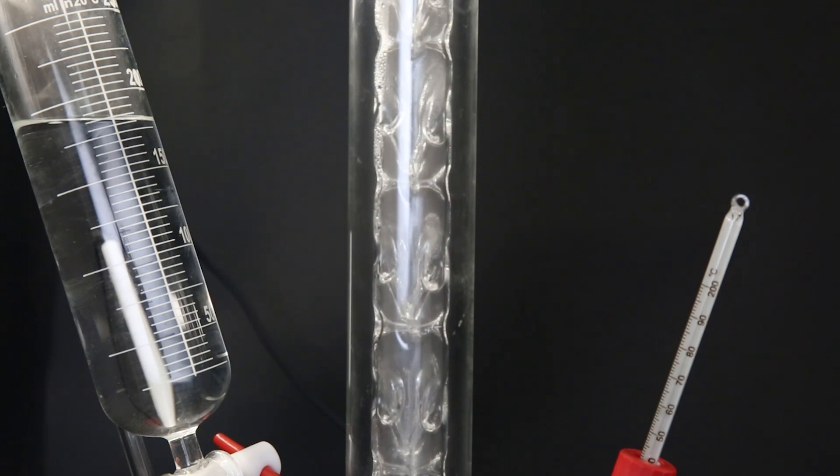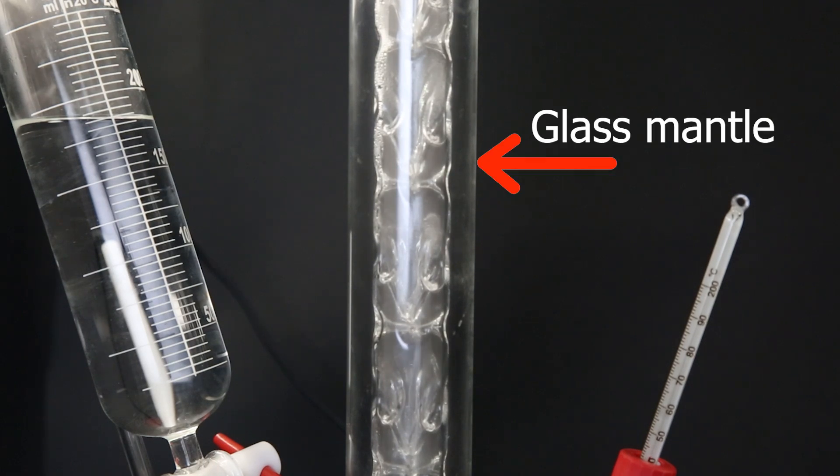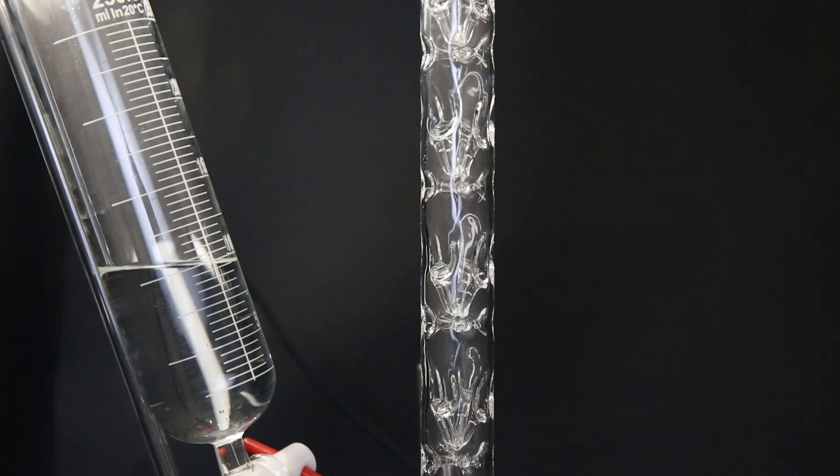Instead, I will try to cool down the column. The first thing I did was removing the glass mantle around it. This should allow the air to cool things down, but unfortunately it wasn't very effective and the temperature stayed the same.